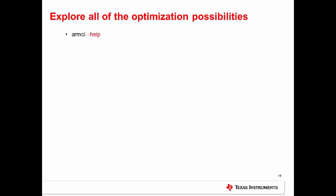All of the many compiler optimizations are beyond the scope of this short blog, but you can get a quick and dirty set of compiler options by using the -help flag. Code Composer Studio has lots of help built in, and there's tons of documentation at TI.com.